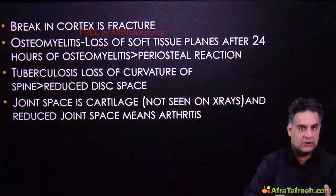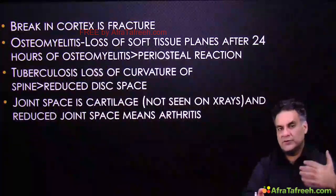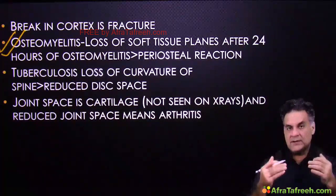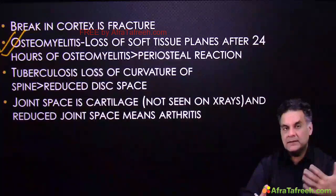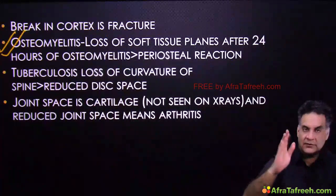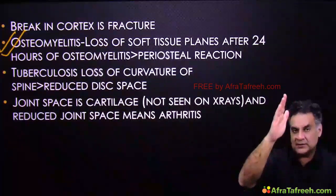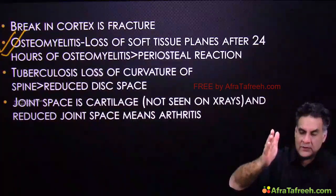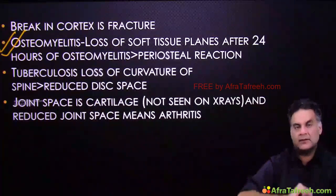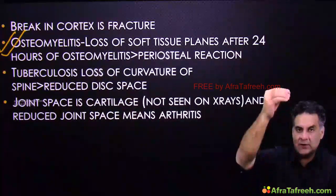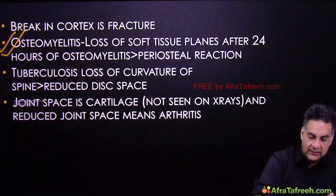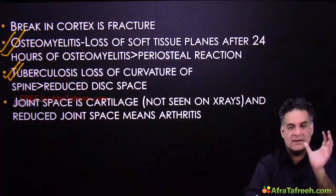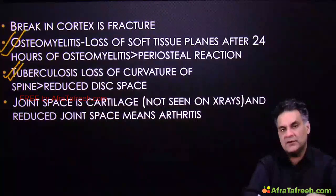Summary so far: break in the cortex is fracture; loss of soft tissue planes is seen after 24 hours, as in osteomyelitis; periosteal reaction takes time to come. For the spine, cervical spine curves inward — cervical lordosis; thoracic comes out — thoracic kyphosis; lumbar goes in — lumbar lordosis. Disease of the spine causes loss of curvature, which appears earlier than loss of joint space. Reduced joint space means arthritis.